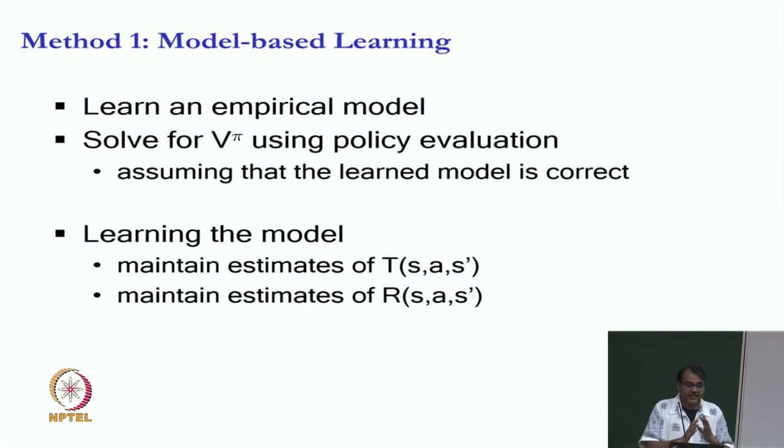So this is our goal and this is what we are going to do. So we will first talk about model based learning. Model based learning is going to be simple. Then we will talk about two methods for model free learning. We will see how far we can go today. So our goal today, first goal is to given a policy pi estimate v pi using model based learning. Model based learning means learn a model, learn a model empirically. What does that mean? That you maintain estimates of transition function, you maintain estimates for the reward function.